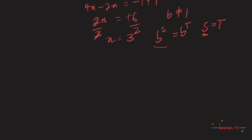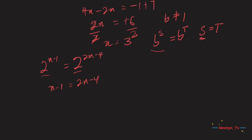Let's solve 2 exponent (x minus 1) equal to 2 exponent (2x minus 4). Since we have the same base, let's use the one-to-one property. So we have x minus 1 should be equal to 2x minus 4. Then we group like terms: x minus 2x should be equal to minus 4 plus 1, giving us negative x equal to negative 3. We divide each side by negative 1, so x should be equal to 3.